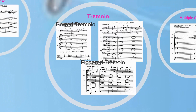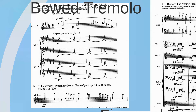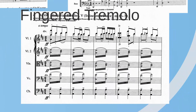Two distinct types of tremolo are available on the bowed string instruments: bowed tremolo, in which the bow is moved back and forth as fast as possible, and fingered tremolo, which is an expanded trill covering the interval of a third or a fourth. Bowed tremolo produces a rustling effect at softer dynamic levels and energy and excitement at higher dynamic levels. The fingered tremolo is a rapid alternation of two notes on the same string, in the manner of a trill, with the notes taken under a single bow. The effect is somewhat similar to that of the bowed tremolo, as illustrated in passages from Bartók's Hungarian Sketches.